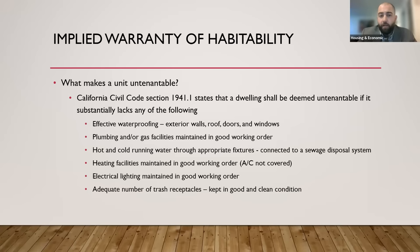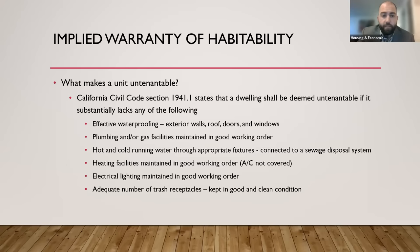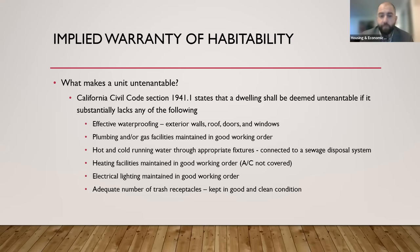What makes a unit untenantable? The statute lists very specific conditions the landlord is required to address. If any of these conditions exist, your unit is not tenantable. The first is effective waterproofing — exterior walls, roof, doors, and windows must be waterproof. If you have leaks coming in through the roof, doors, or windows, that's a habitability issue your landlord needs to address.